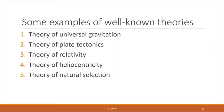A hypothesis becomes a theory only when it has been thoroughly tested and confirmed so much that it is accepted as truth. Well-known theories include the theory of universal gravitation, the theory of plate tectonics, the theory of relativity, the theory of heliocentricity, and the theory of natural selection. Only very special sets of hypotheses become theories — those which are true, tested over and over again by many people over long periods of time, and consistently demonstrated to be true.